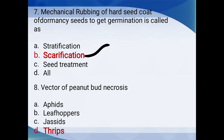Vector of peanut bud necrosis: aphids, leafhoppers, jassids, or thrips? The answer is thrips.